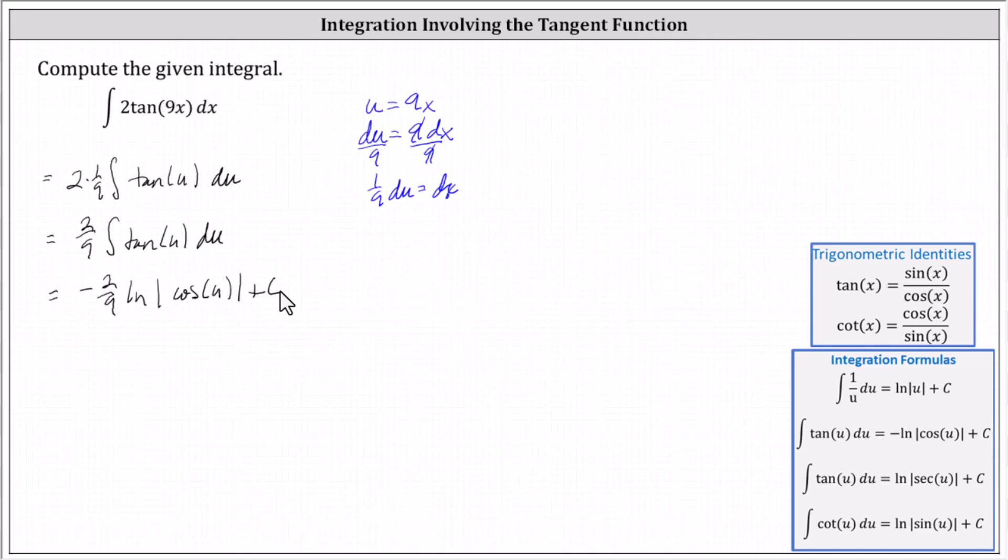We're looking for the antiderivative with respect to x. So now we substitute nine x for u, which gives us negative two ninths times natural log absolute value of cosine nine x plus c.